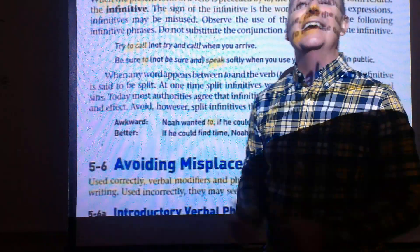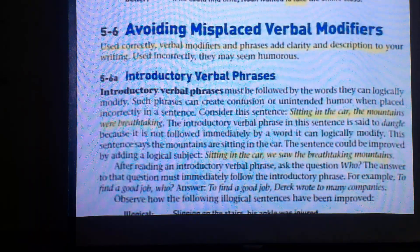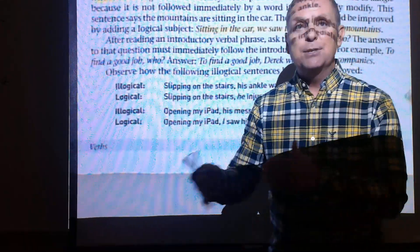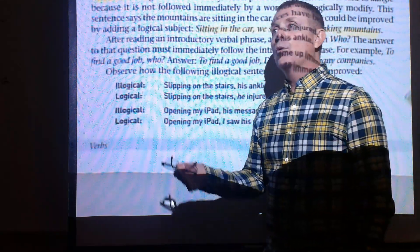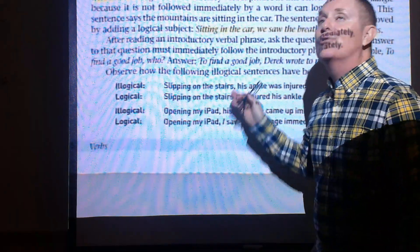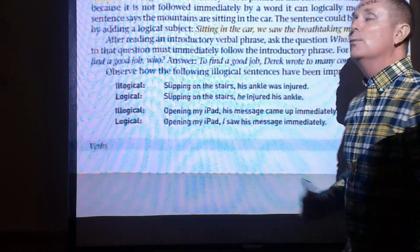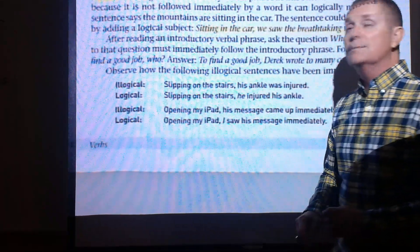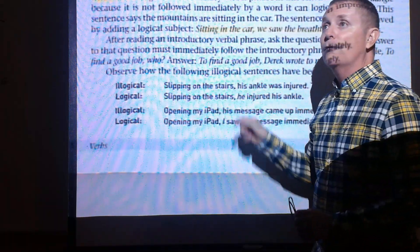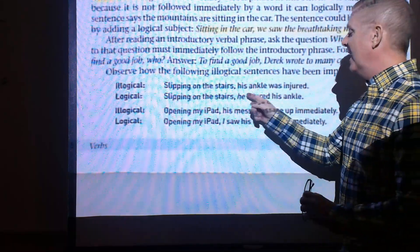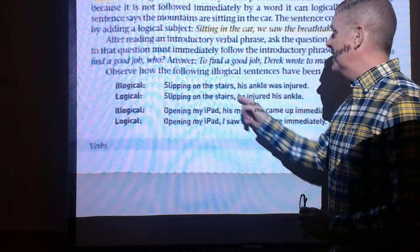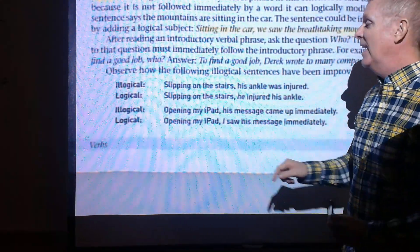Also avoid misplaced verbal modifiers. For example, 'slipping on the stairs, his ankle was injured' — it appears the ankle slipped on the stairs, which is untrue. Always offset an introductory verbal phrase with a comma, and the noun or pronoun it modifies should immediately follow. Better: 'Slipping on the stairs, he injured his ankle.' Put modifiers as close to the verbal phrase they describe as possible.